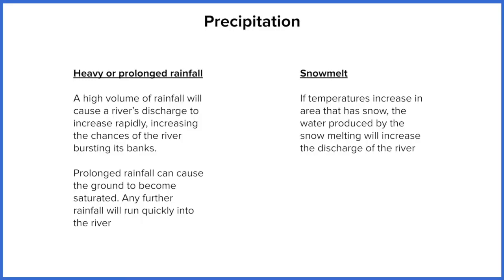Prolonged rainfall also means that if it's raining for a long period of time over several days, the ground might have absorbed as much water as it potentially can, which means it won't be able to take in any more. This is called becoming saturated. The ground becomes saturated, and again leads to more surface runoff, meaning more water reaches the river quicker.